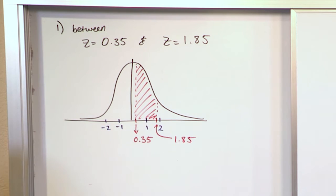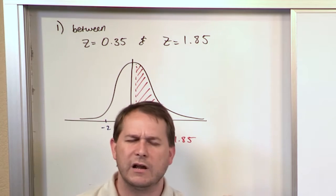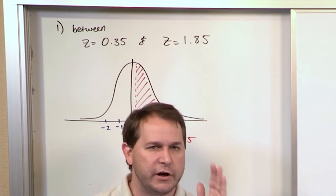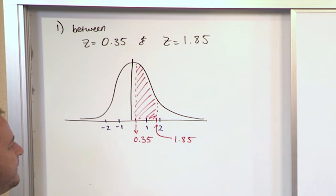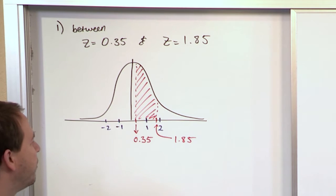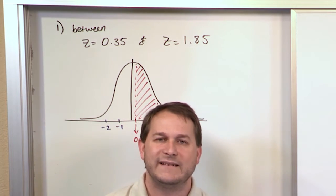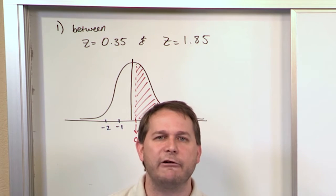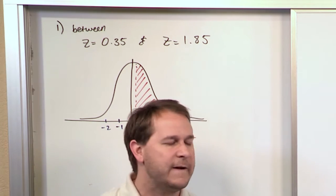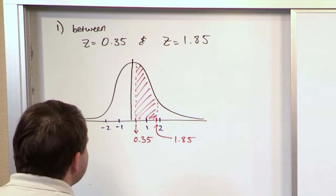A lot of times you don't want the area off to the left. You want to know the area between two values of z, but you want to use that same table we've already used. You might say, I don't know how to do that because the table gives us the area to the left. The answer comes in the form of subtraction.